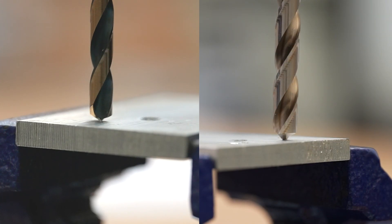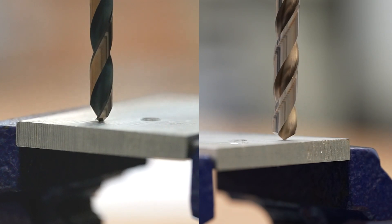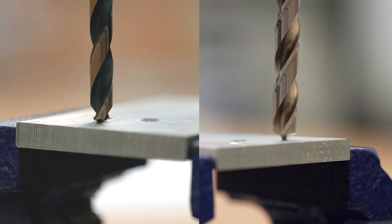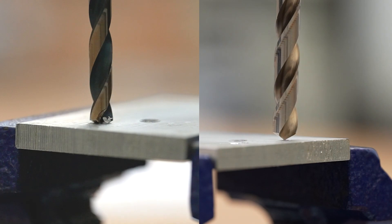A wider chisel requires more downforce to start the hole. By splitting the point, we can reduce the force needed to drill by over 50%.